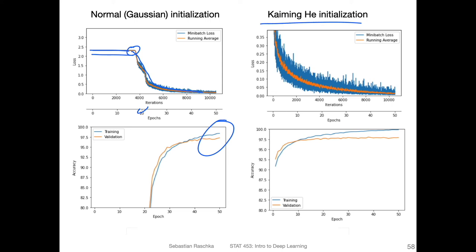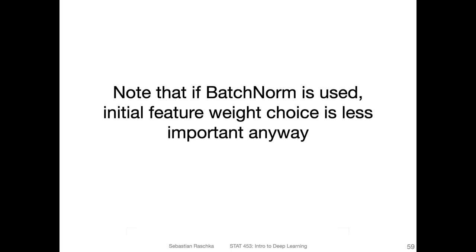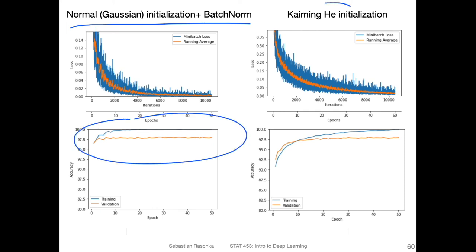For the Kaiming initialization, that trained pretty well from the beginning — it looks much better. This is why we would use Kaiming initialization for a network with ReLU activations. I should mention, if we use batch norm, then actually this initial weight choice is less important than you might think, because batch normalization normalizes the activations anyway. When I tried this in practice, on the left hand side I'm showing the Gaussian initialization with batch norm, and things train well for this case too. With batch norm, it trains even faster than Kaiming without batch norm.